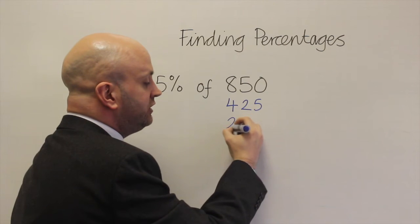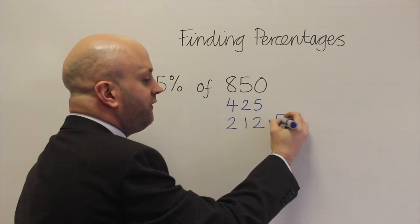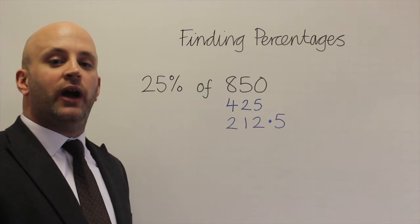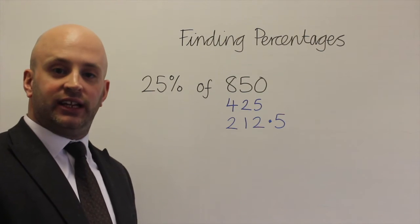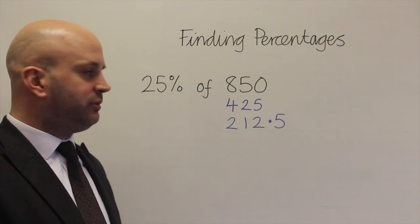So half of 400 is 200, half of 25 is 12.5 and that would be one really quick, really easy way of finding 25% is to use your halving and halving skills. Finding a quarter is the same thing.